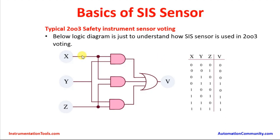In the case of two-out-of-three voting, sensors X, Y, and Z are three different sensors and B is the output. Whenever two sensors — for example Y and Z — go high, the output will be one. This is a simple logic truth table showing how safety is handled and the equipment is protected suitably in a safe way according to the process requirement.